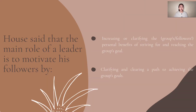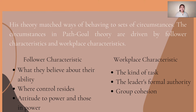House said that the main role of the leader is to motivate followers by first, increasing or clarifying the personal benefits of striving for and reaching the group's goals. Second is clarifying and creating paths to achieving those goals. House's theory matches ways of behaving to sets of circumstances.